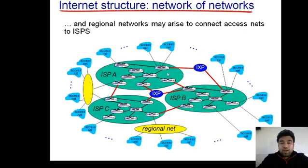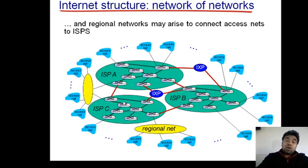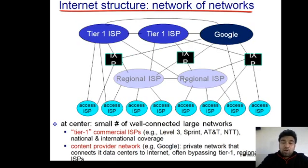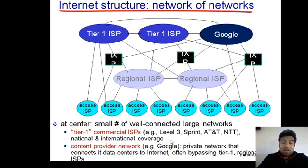Tier 1 ISPs are very costly because they are connected with very high bandwidth links, and they must handle very heavy traffic since they provide international coverage, transferring data from one end of the globe to the other. The services of these ISPs are very costly. Some examples of tier 1 commercial ISPs are Level 3, Sprint, AT&T, and NTT — companies that provide national or international coverage.